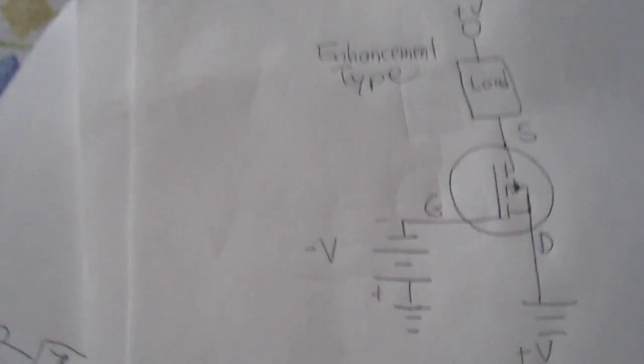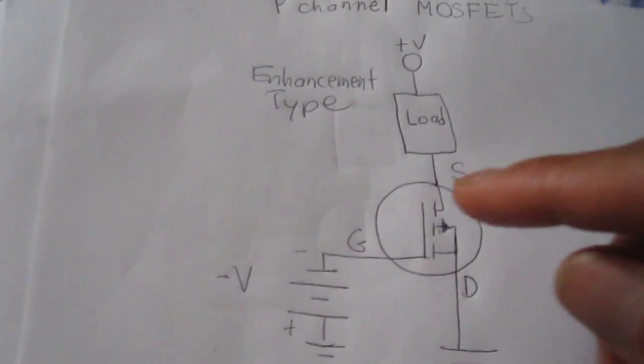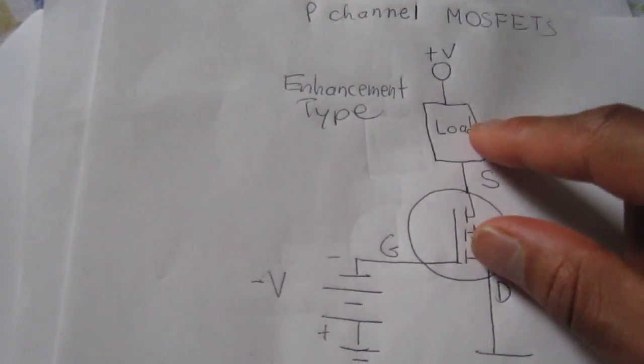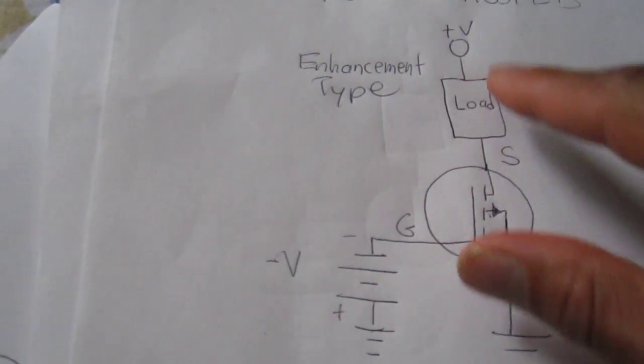So to bias a p-channel MOSFET, we connect the source terminal to the load and positive voltage supply.